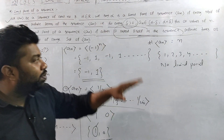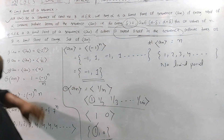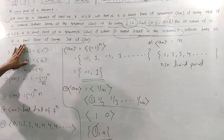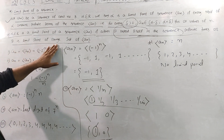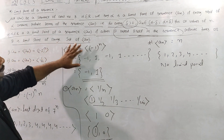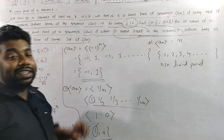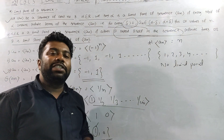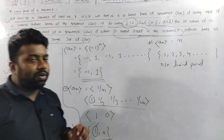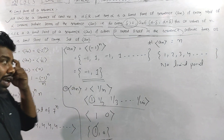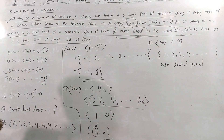Or it is a limit point of the range set of (a_n). The range set gives the particular values of the sequence.